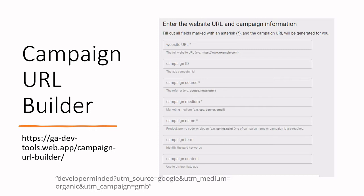For this you can use the Campaign URL Builder — I'm giving the link in the description. I'll show you how you can build the link using the Campaign URL Builder.